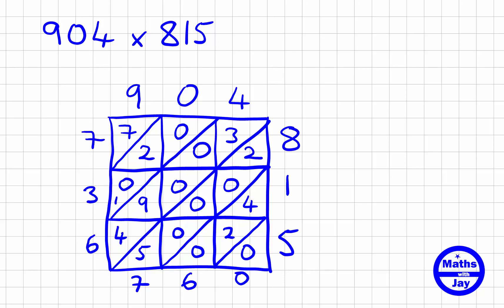We've only got a seven to put up there. Now we can read off the answer. We start at the top left hand corner, and the answer is seven hundred and thirty-six thousand, seven hundred and sixty. We just write all these numbers down in order, so we've worked out that our answer is 736,760.